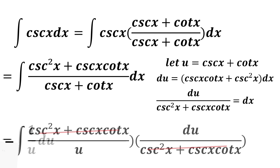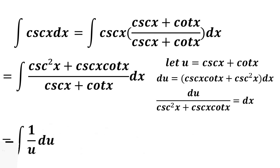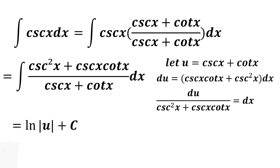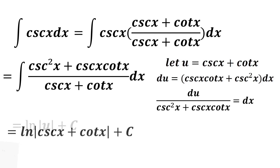Cancel cosecant squared x plus cosecant x cotangent x, giving the integral of 1 over u du. This equals ln of the absolute value of u plus c. Substituting back cosecant x plus cotangent x for u, the final answer is ln of the absolute value of cosecant x plus cotangent x plus c, which is the integral of cosecant x.